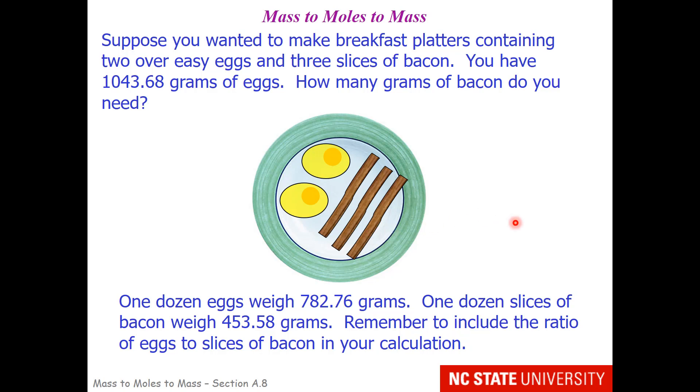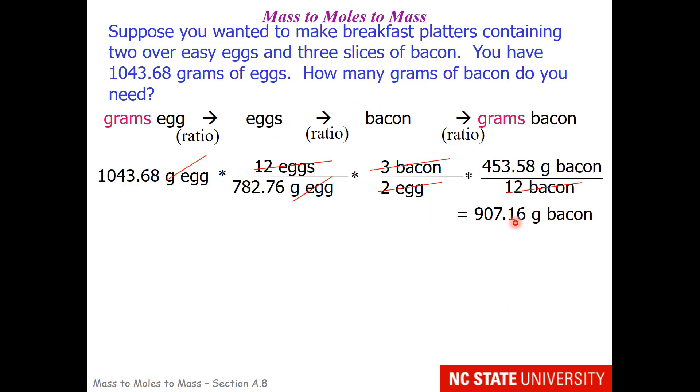So let's think about how we would do this problem. Here is how I recommend approaching this problem. You should go from grams of eggs to individual eggs. And then go to individual bacon, followed by grams of bacon. So here is our starting ratio. 1,043.68 grams of egg.